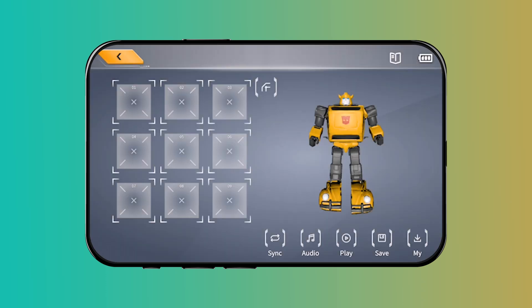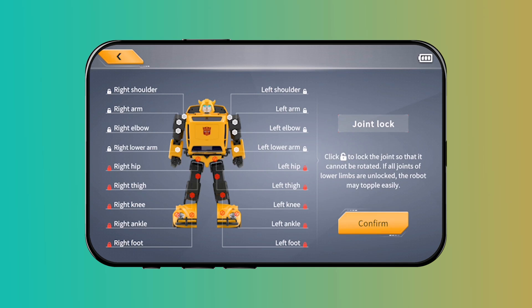There are totally 18 joints. You can click the lock icon to lock and unlock specific joints of the robot. By default, the joints on the upper body of the robot are unlocked, while those on the lower body are locked.